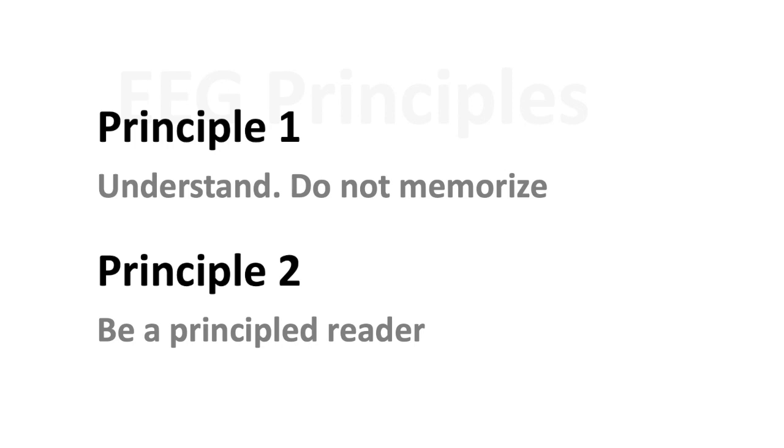Principle two is, be a principled reader. This could have easily been number one, if not for the title of the series. However, as you become more experienced in reading EEG, you will encounter a wide variety of interpretations which may be assigned to the same EEG by different readers. Strong principles of interpretation will allow you to defend your own interpretation against others.